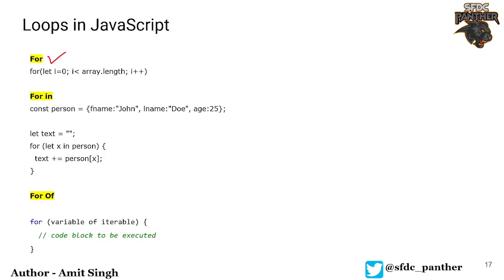This is the for loop — a simple, traditional syntax. We start a loop from zero, then say the loop variable is less than the length of our array, then increment the variable. Within the curly braces we define our statements. For for-in, it is useful when you have an object and want to iterate over it — you write 'for (let x in person)' and it gives you the key.